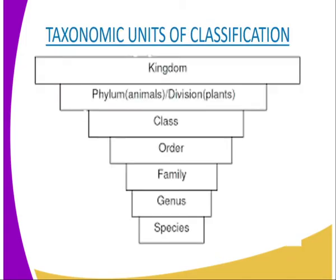We are going to see the seven taxonomic units of classification. The broadest taxonomic unit is the kingdom. The kingdom is divided into several phyla, which in plants is known as division. The phylum — plural phyla — is the second grouping; it sorts out organisms based on body plan and form. Within a phylum, members are further divided into groups called classes.